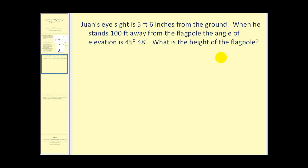Let's go ahead and sketch what's happening here. If this is Juan, then let's call this the line of sight. This would be five feet six inches. Let's convert this to a decimal, so this would be 5.5 feet. And he's standing 100 feet away from the flagpole.